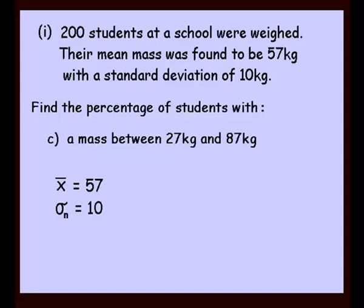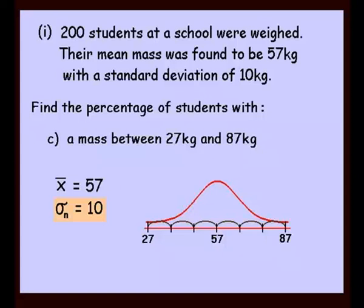Question C. The mass required is between 27 and 87. So once again, a new bell curve, 57 marked in the middle. If we go up, there's our standard deviation of 10. If we go up this time three lots of 10, that'll take it up to 87. If we go down three lots of 10, we'll take it down to 27, which again corresponds with what we're being asked. So remember, three standard deviations each way indicates that 99.7%. So 99.7% of students would have a weight somewhere between 27 and 87 kilos.